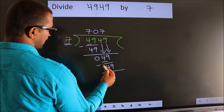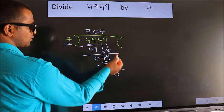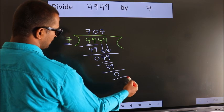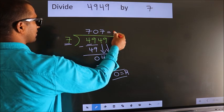Now we subtract. We get 0. No more numbers to bring it down, so we stop here. This is our remainder. This is our quotient.